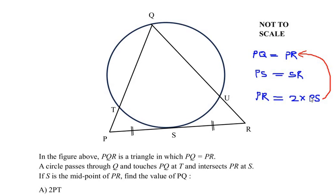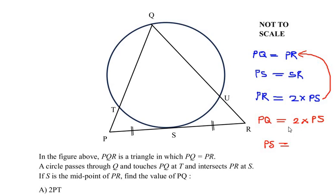Now let us substitute: in place of PR we write two times PS, so PQ is equal to two times PS. We can also write PS as half of PQ — that is, by taking two to the other side — so PS equals one over two times PQ. Let us consider this as equation one.